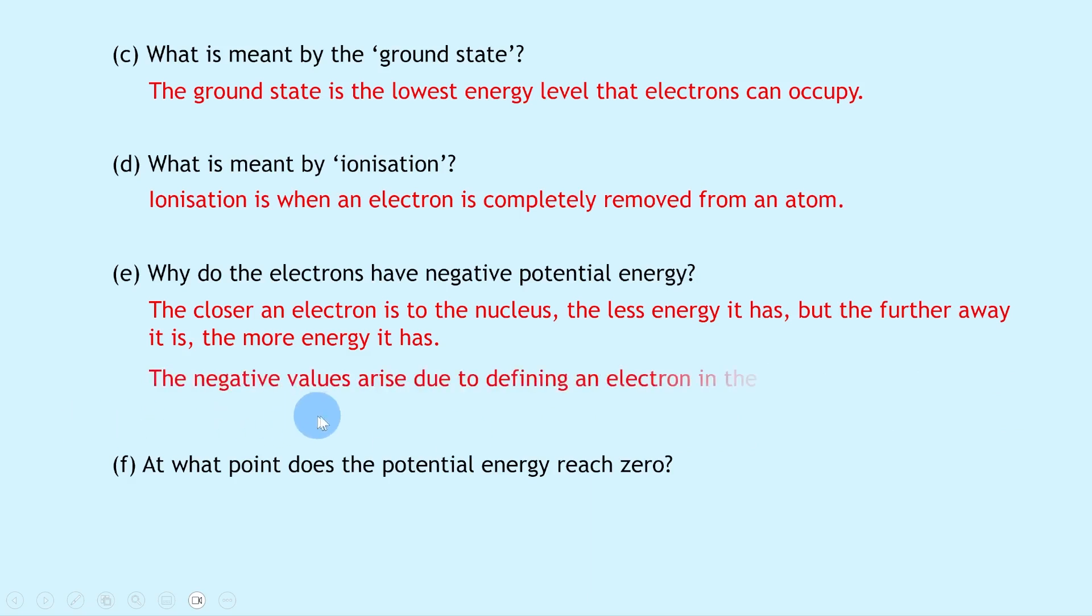This energy is potential energy. The negative values arise due to defining an electron in the ionized state as having zero potential energy, i.e., zero joules. Lastly, part F says at what point does the potential energy reach zero?